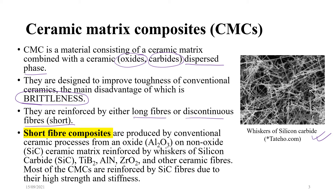Short fiber composites are produced by conventional ceramic processes from an oxide — which could be alumina — or a non-oxide ceramic matrix, reinforced by whiskers of silicon carbide, titanium boride, aluminum nitride, zirconium oxide, and other ceramic fibers. The short fiber composites are typically produced by these conventional ceramic processes from an oxide or non-oxide ceramic matrix reinforced by whiskers of silicon carbide, etc.